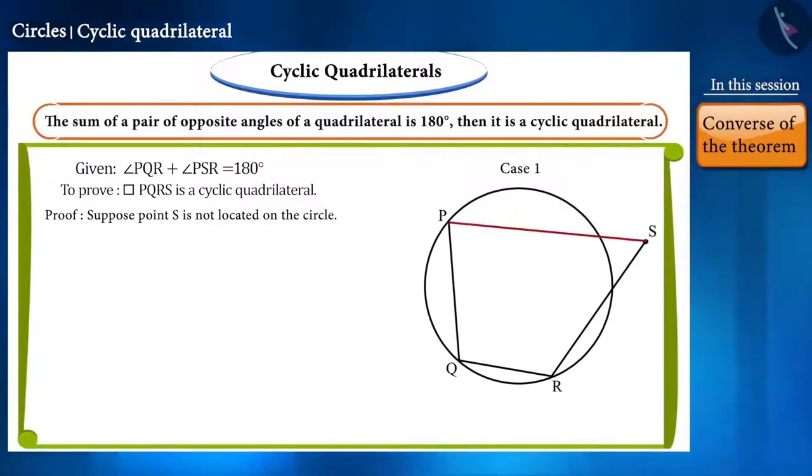Then, line segment PS will intersect the circle at some point. Suppose it will intersect it at point T.